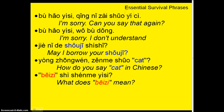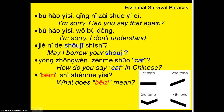Chinese is a tonal language. What that means is that if you say a word in Chinese, using a different tone can give it a completely different meaning. English is not a tonal language, although we have inflections — for example, 'He's American?' as a question versus 'He's American.' as a statement.